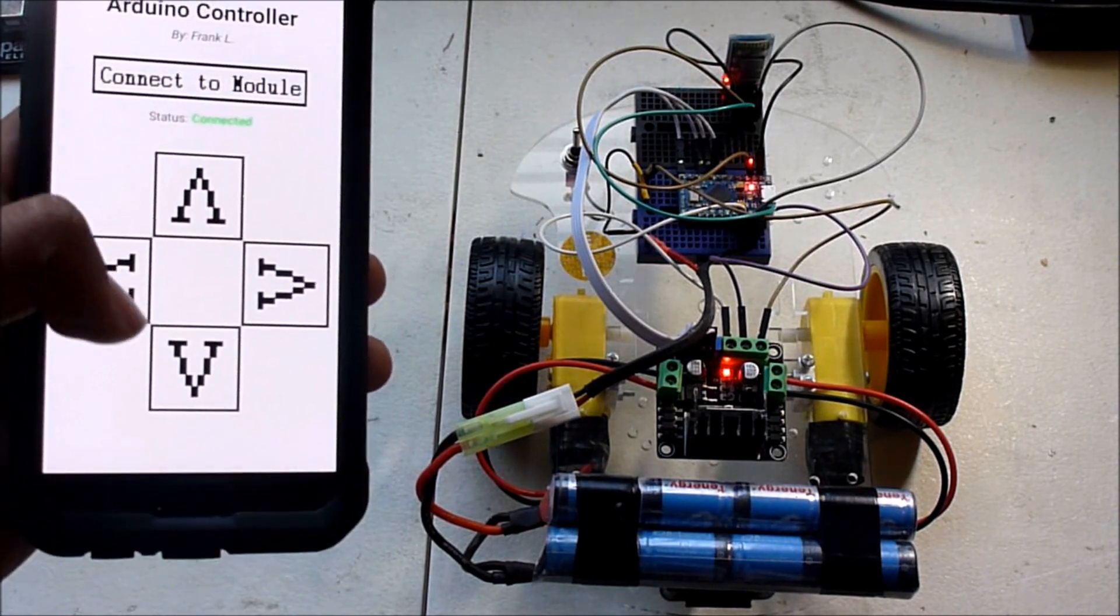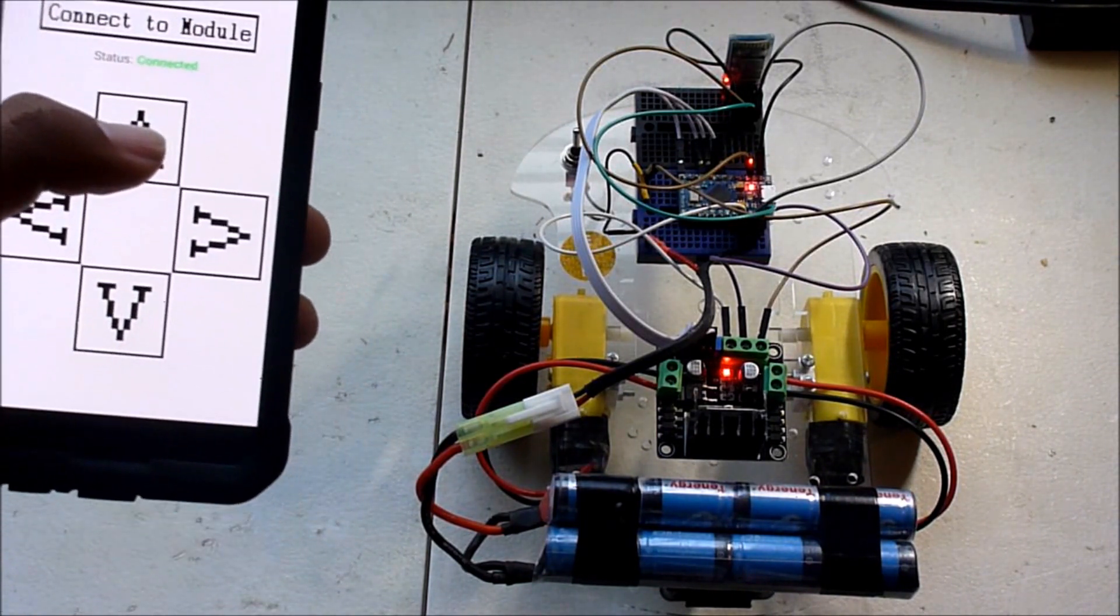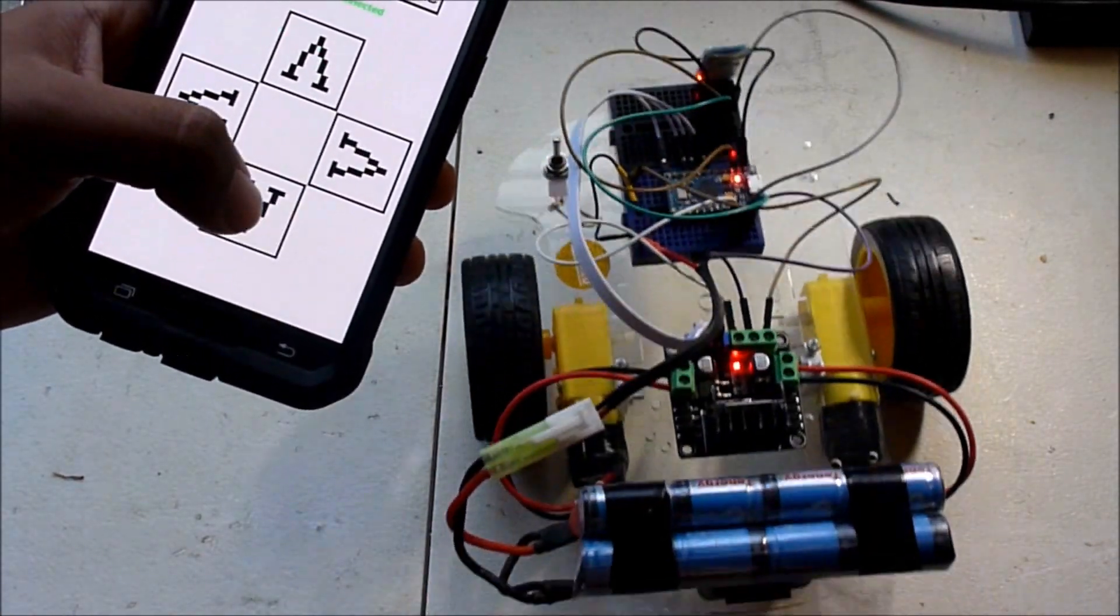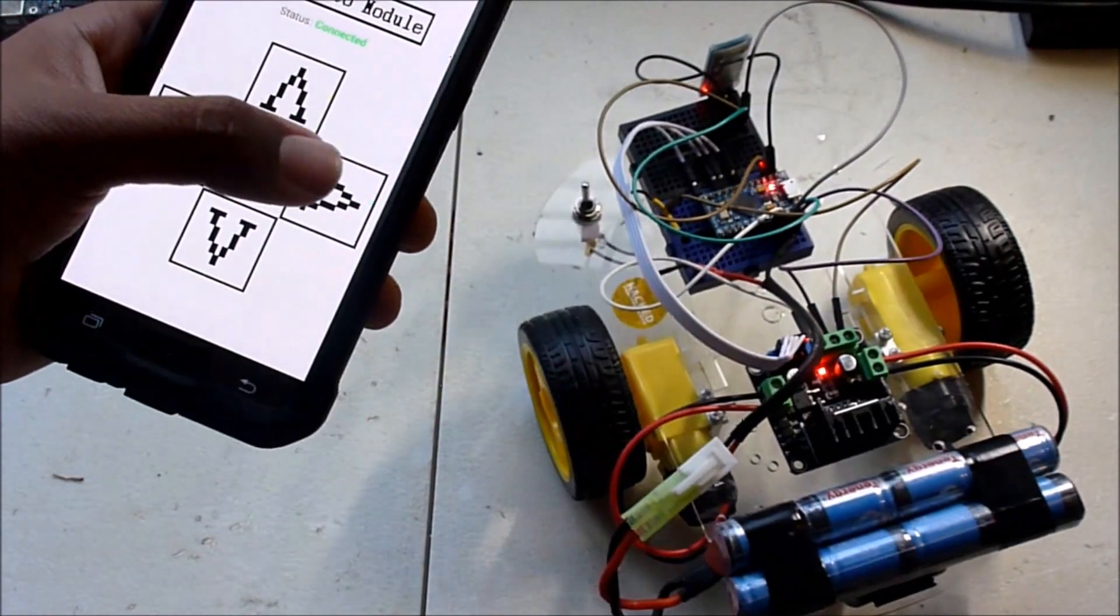Now, when I press a button, it will go in a different direction. When I press forward, it will move forward, backwards, and can rotate left and right.